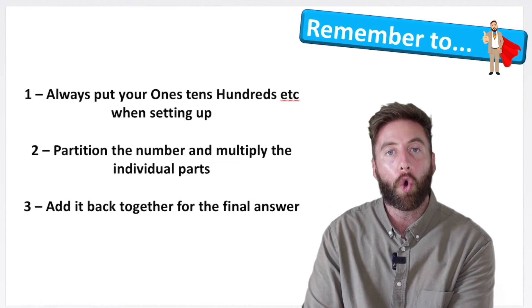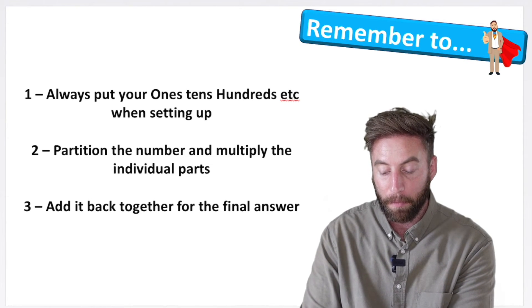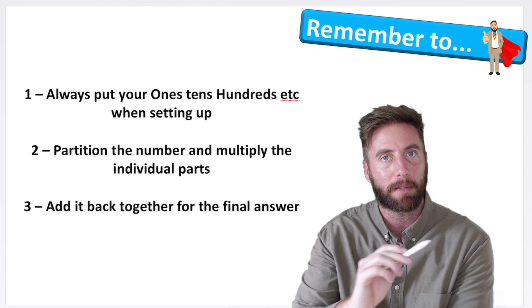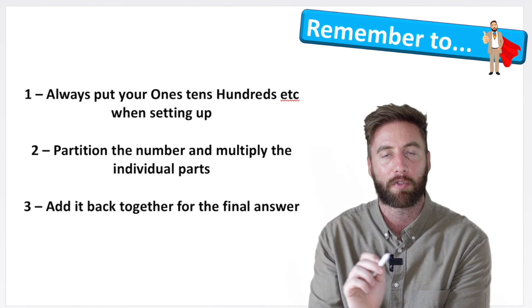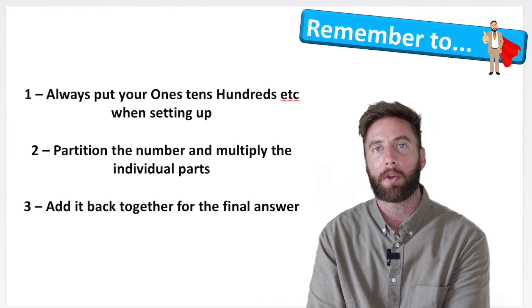Here are things to remember. Always put your ones, tens, hundreds when setting up. Partition the number and multiply the individual parts, and don't forget to put your placeholder on that second row, and then finally add it all back together once you've multiplied all the individual parts.